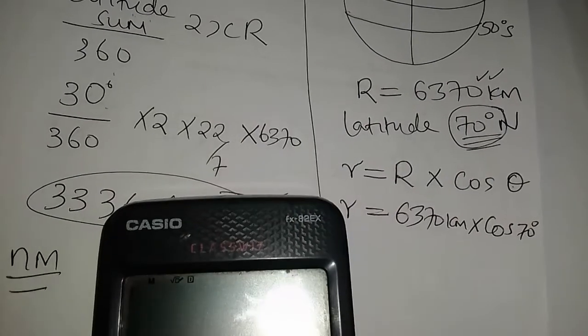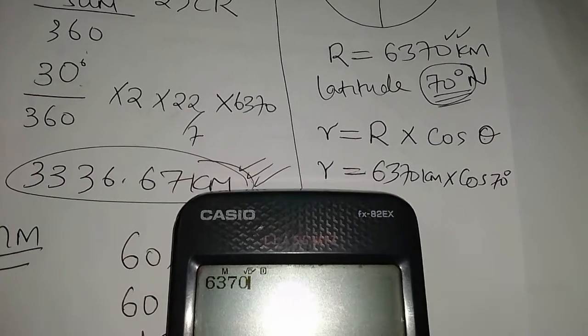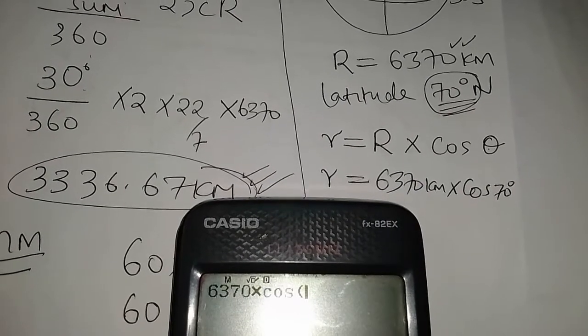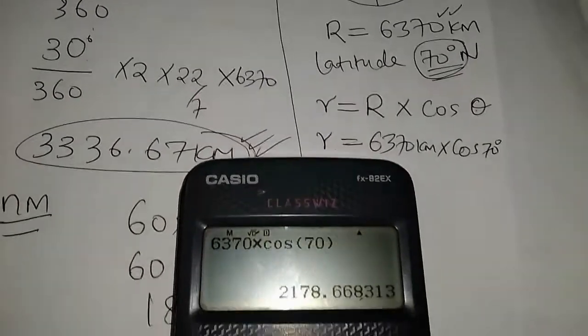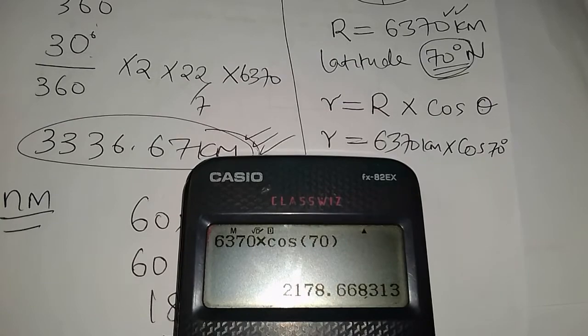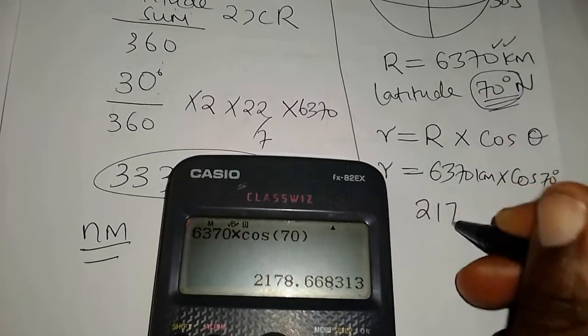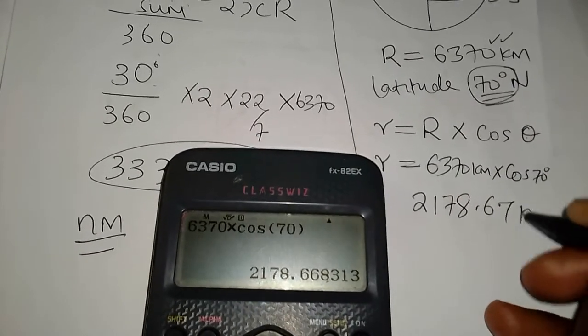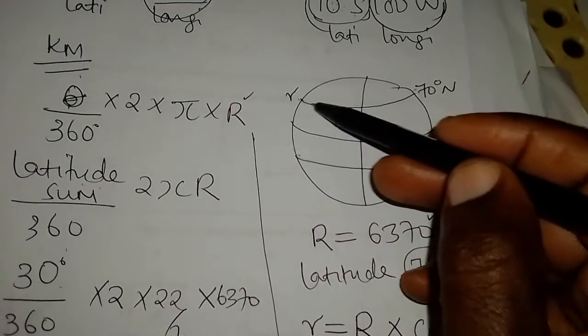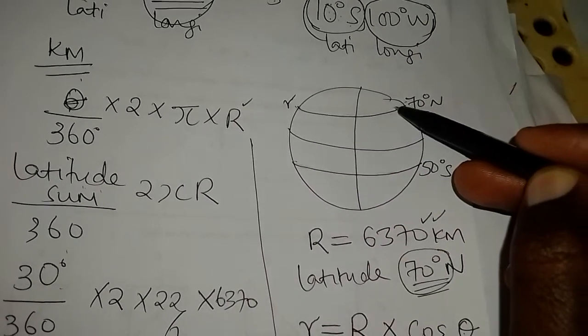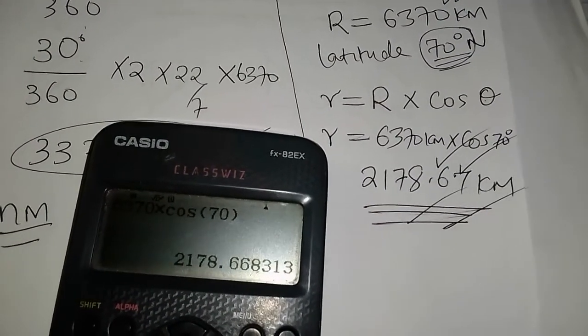So I'll pick my calculator and plug in those values to get the final answer. And I have 6370 multiplied by cos 70. So what is the radius of that? 2178.67. So we have 2178.67 kilometers. That's the radius of that. So that means the radius of this latitude is 2178.67 kilometers.